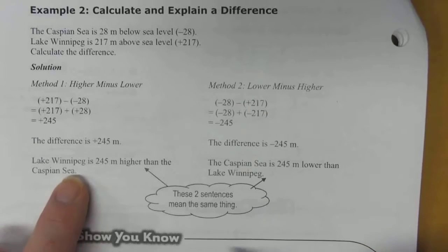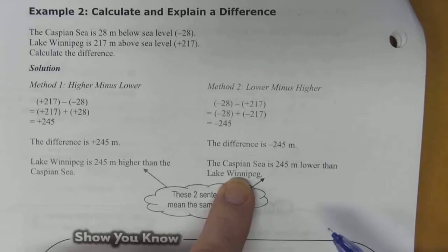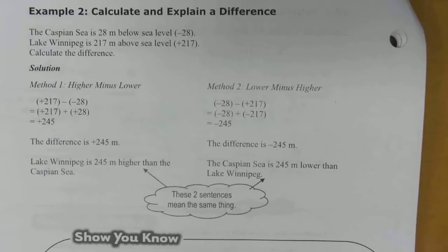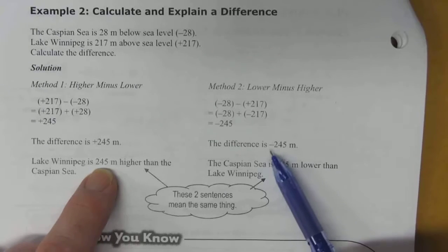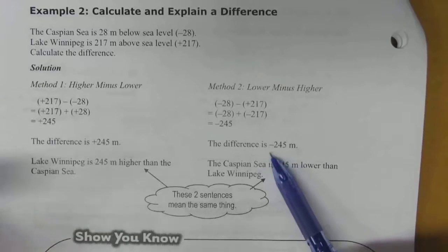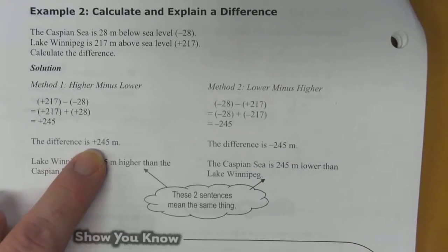They mean the same thing, whether you say Lake Winnipeg is 245 meters higher than Caspian Sea, or you say the Caspian Sea is 245 meters lower than Lake Winnipeg. It doesn't matter which way you say it, it means the same thing. The numbers are the same, your magnitude is the same. It's all about perspective, whether you're referencing one to be lower or one to be higher.